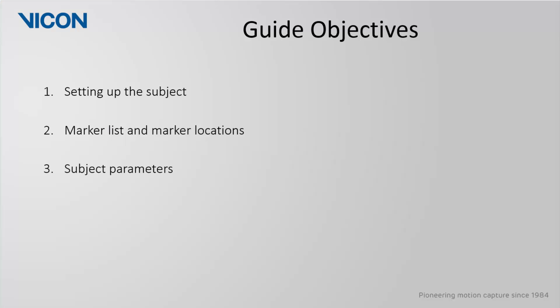In this guide we will first look at setting up the subject properly within Nexus. Next, we will look at the markers that comprise this template and where to actually place them on the body. Lastly, we will look at the subject parameters which are used to calculate segmental inertial properties and joint center locations.